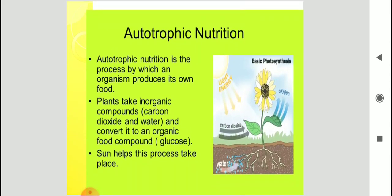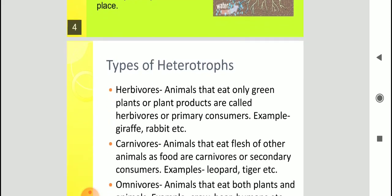Before that, as I told you, green plants, they are the examples of autotrophs. So plants, they take inorganic compounds that is carbon dioxide and water and then in the presence of sunlight, they can convert it into organic food compound. So this is your basic photosynthesis.